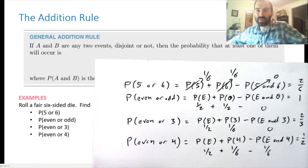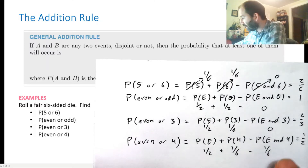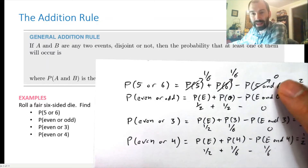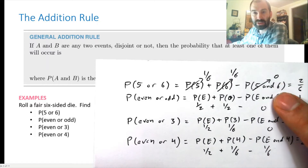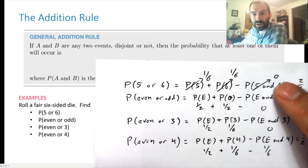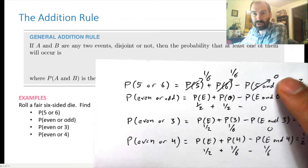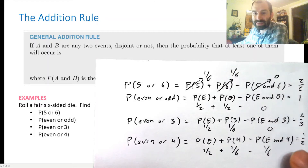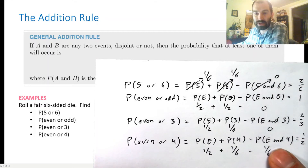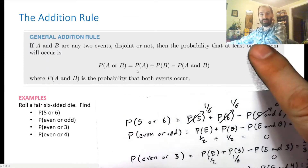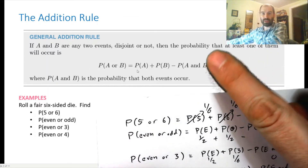Sometimes the P(A and B) term is zero — these are called mutually exclusive events — but that's not always the case. You should always include that term in your computation just in case, so don't forget the A-and-B piece.